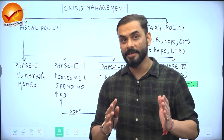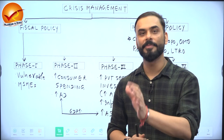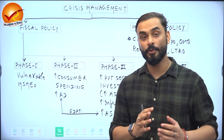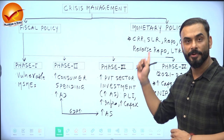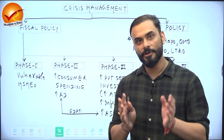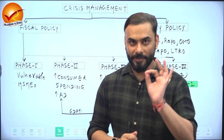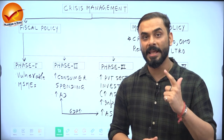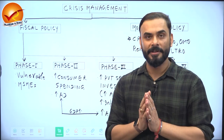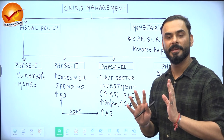COVID was a unique crisis because it started as a health crisis and very soon got converted into both a health and economic crisis. To control such a vast scale of crisis, governments across the world followed an integrated approach using both fiscal and monetary policy to reduce the impact. Government of India was no exception — we also followed an integrated approach to control the impact of COVID, take care of our vulnerable section, and revive economic growth.